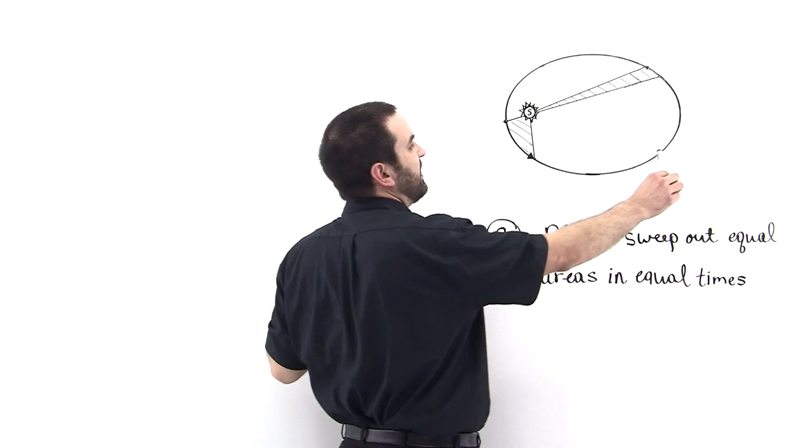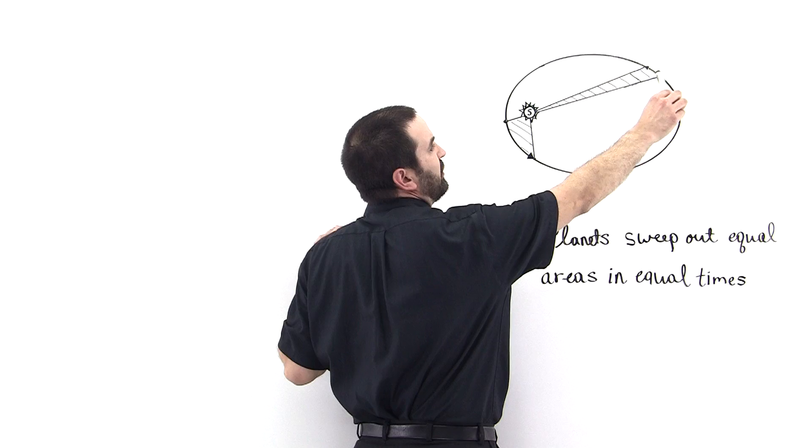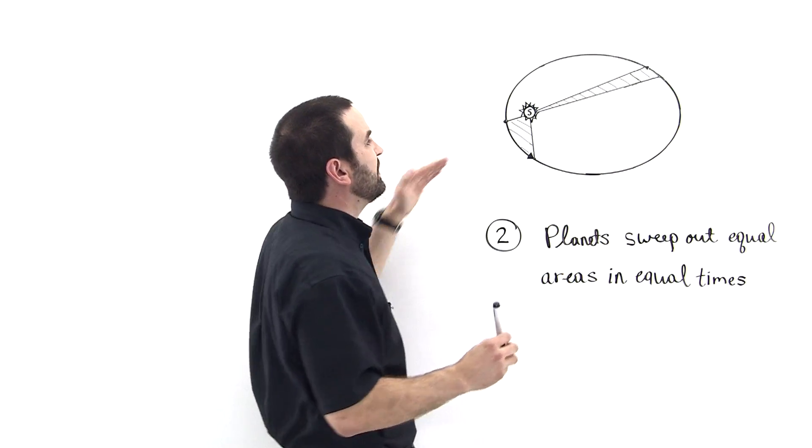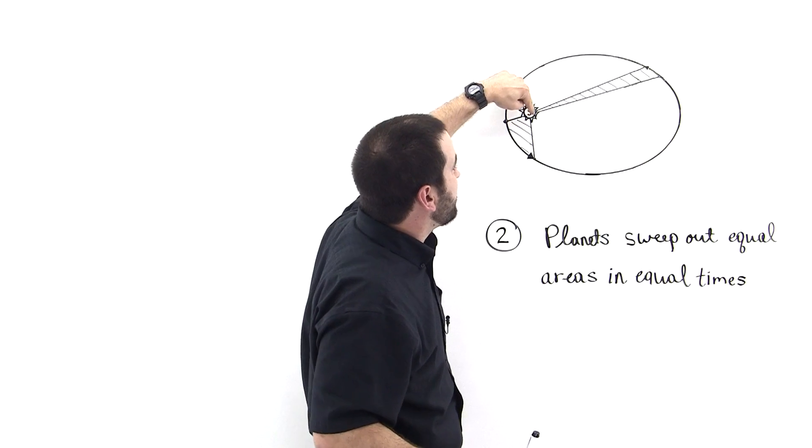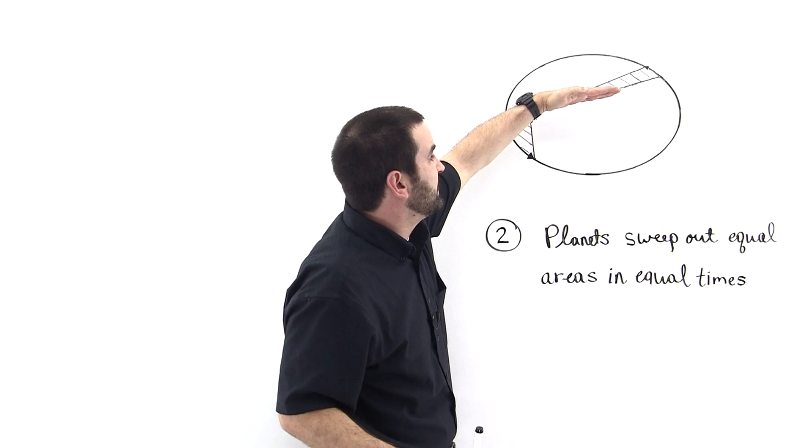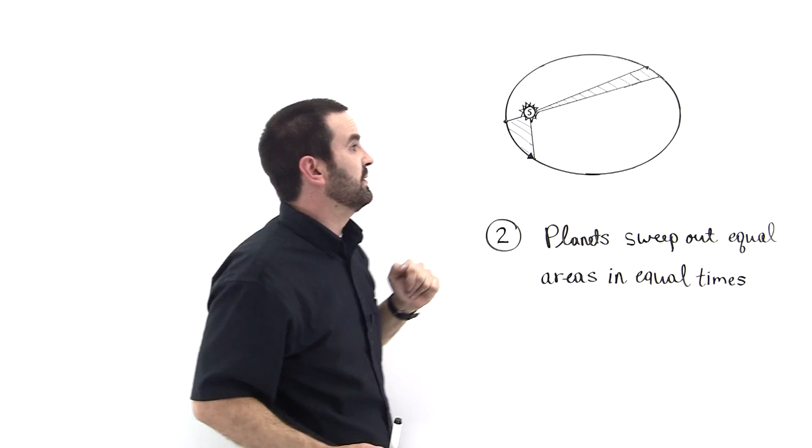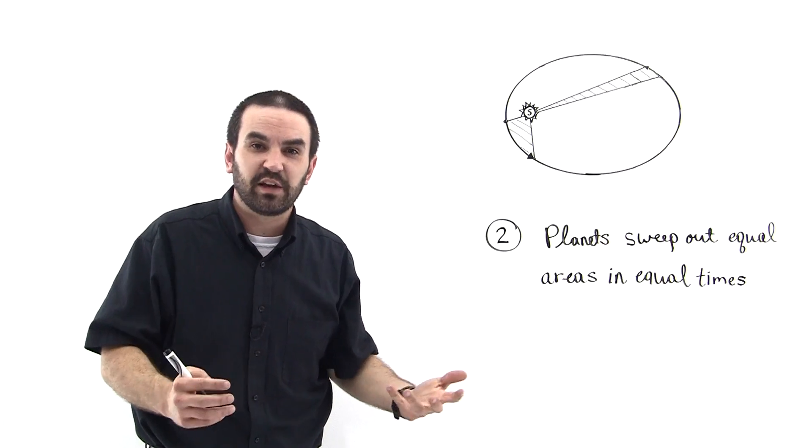But whenever the planet gets over here, it's moving slower and so it covers a smaller arc length and so delta theta is small but the radius from here all the way to here compensates for that such that it sweeps out an equal amount of area. And so this is the law, equal areas in equal times.